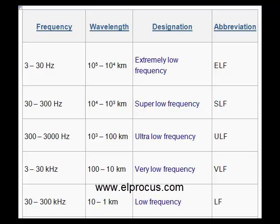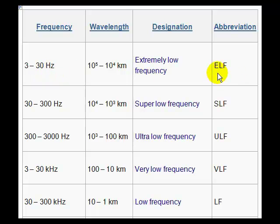Hello, let's try to understand what is RF. RF is a short form of radio frequency. Frequency as we know is an AC environment, and if you look at this table we find that from 3 Hz to 30 Hz we call it extra or extreme low frequency. Then from 30 Hz to 300 Hz super low frequency, and so on.